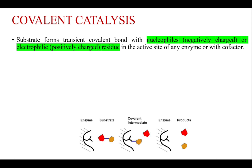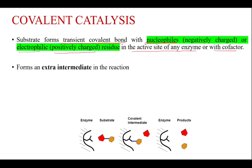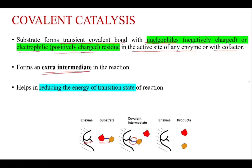Next is covalent catalysis. The substrate forms a transient covalent bond with nucleophiles — meaning negatively charged molecules — or electrophiles, that is positively charged molecules, in the active site of an enzyme or with a cofactor. The formation of this extra intermediate in the reaction helps in reducing the energy of the transition state and thereby helps in easy conversion into the product.